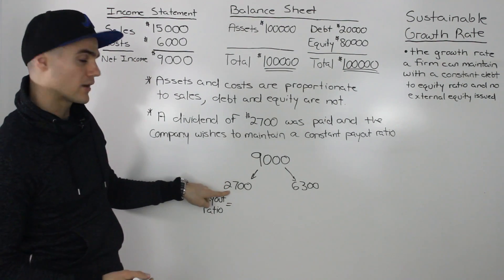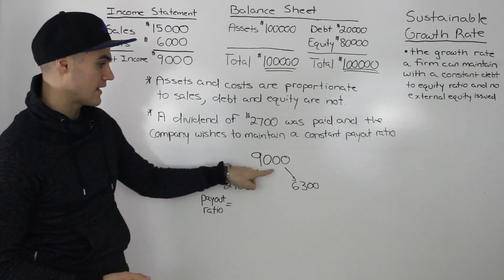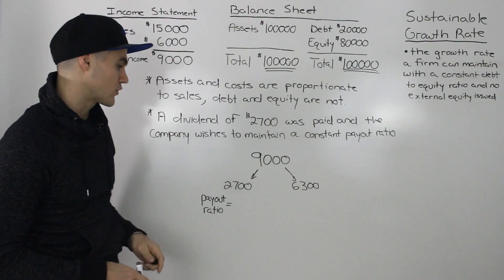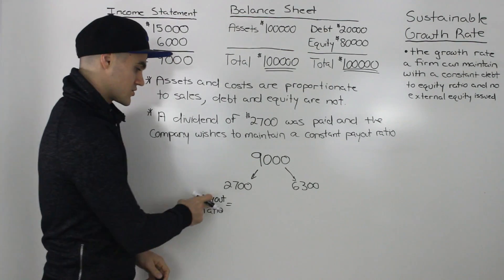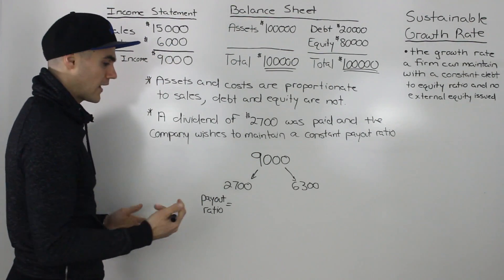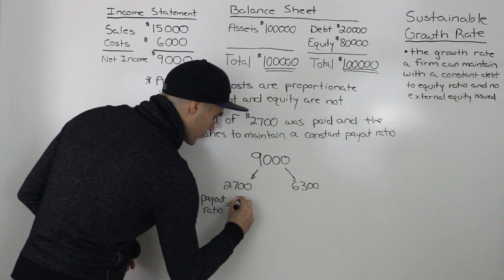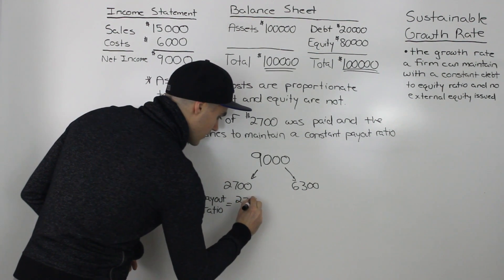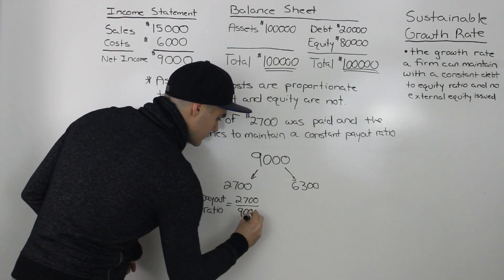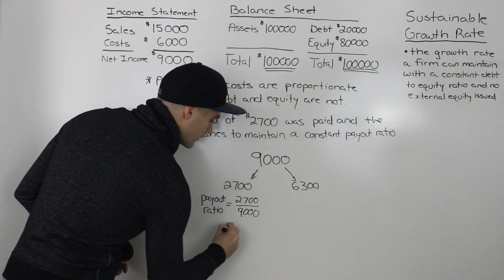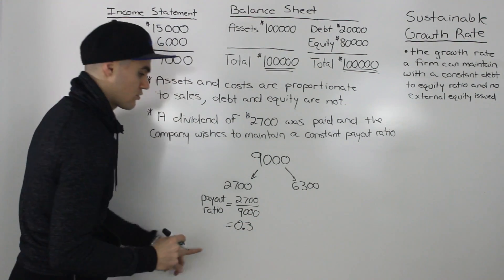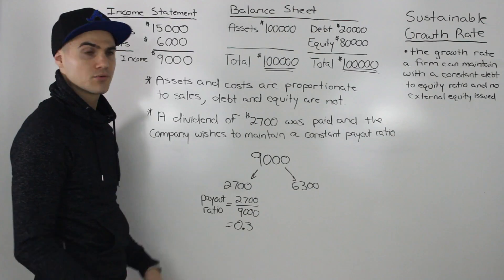$2,700 was paid out as a dividend. That means $6,300 was retained in the company for growth. The payout ratio is dividends over net income, so it would be $2,700 over that net income of $9,000. When you divide both of those, you would get 0.3, or a 30% payout ratio.